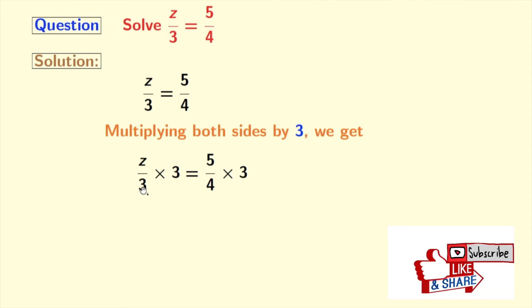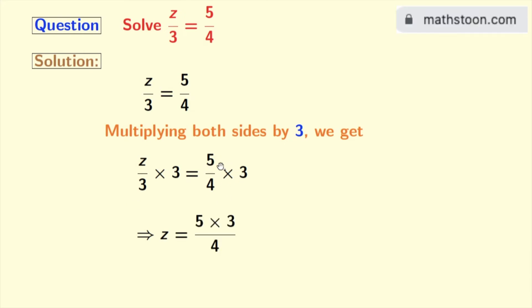On the left hand side, 3 and 3 get cancelled and we are left with z. And we will rewrite the right hand side as 5 × 3 / 4. Now, as 5 × 3 is 15, we get z = 15/4.